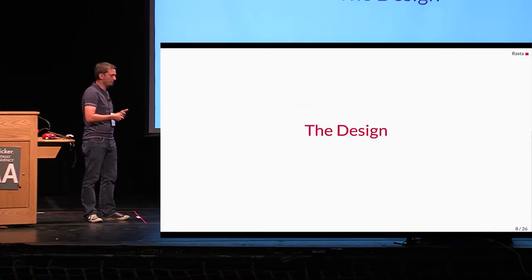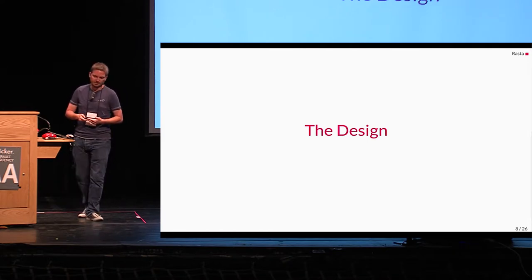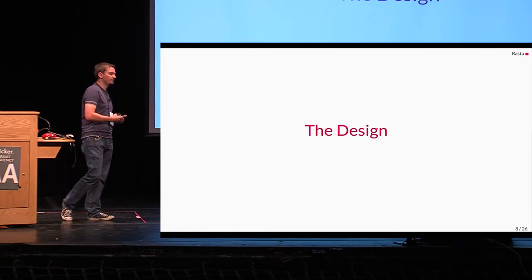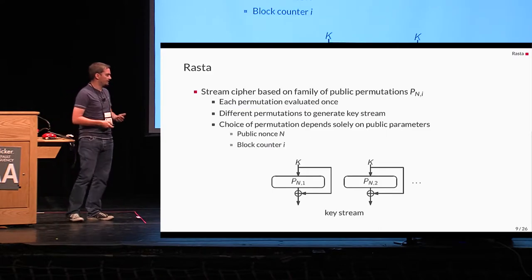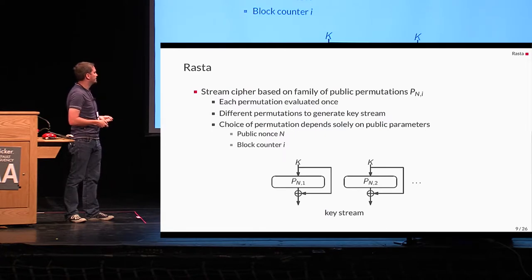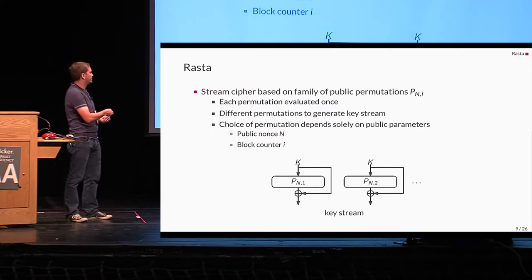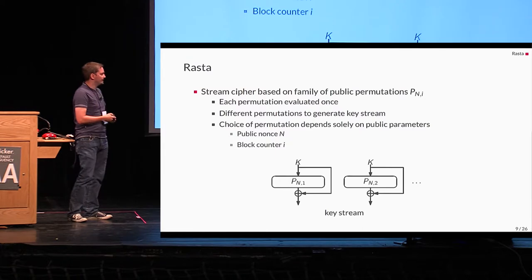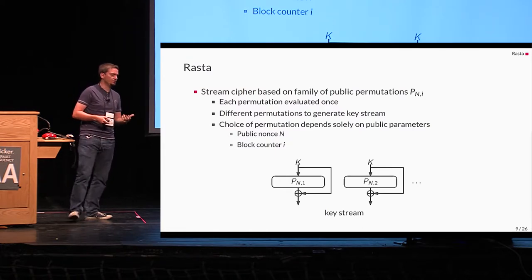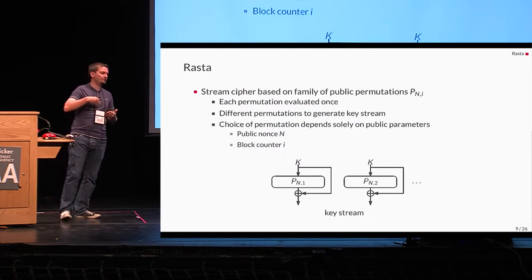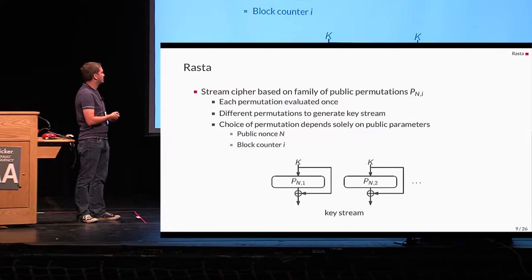So how did we overcome this fact? Our idea was that the problem lies in the fact that a low degree function is evaluated several times. But what if it's just evaluated for one time? So we end up with Rasta as you can see here. And the idea is to take or define a family of different low degree permutations which are just evaluated once by the key and feed forward. And to produce in this way the key stream which is used to encrypt the plain text. The choice of the permutation here solely relies on public parameters which is the public nonce which has to be sent together with the ciphertext and also block counter for the different number of blocks.